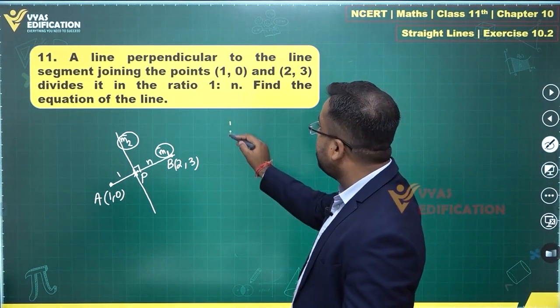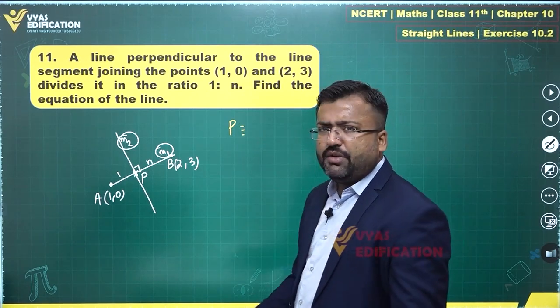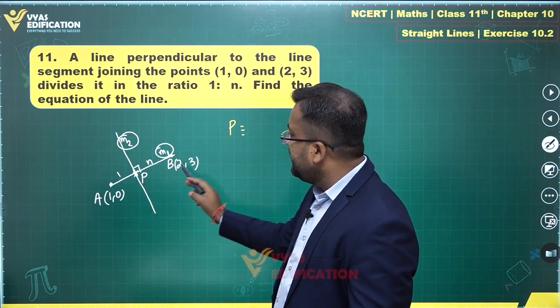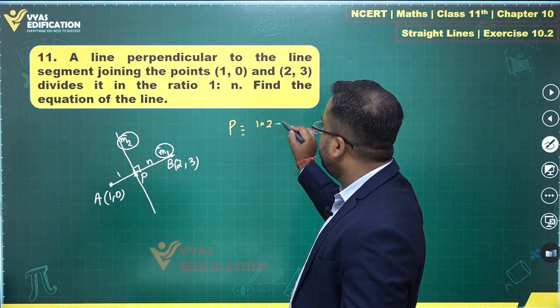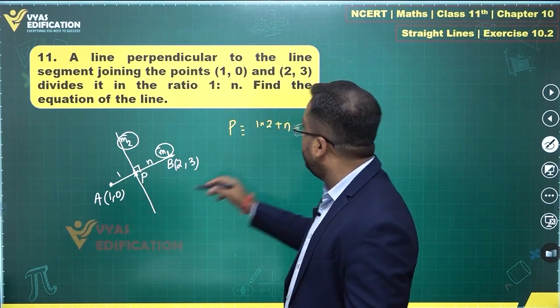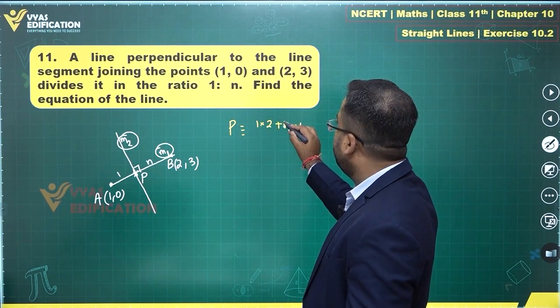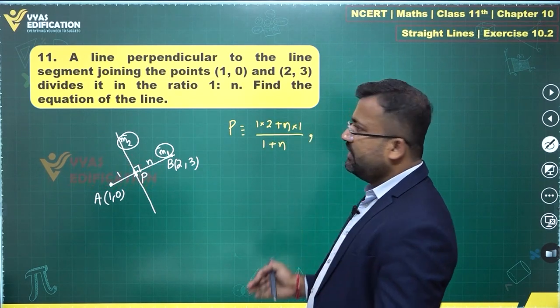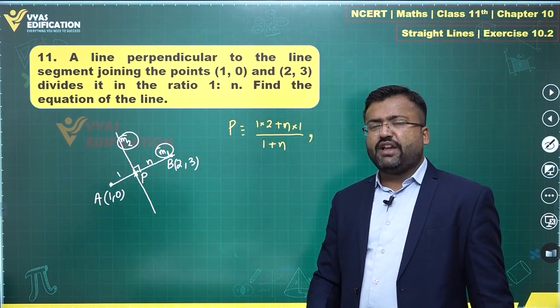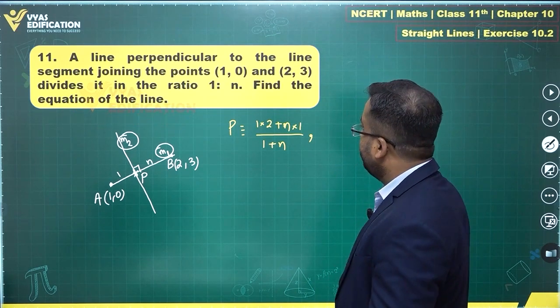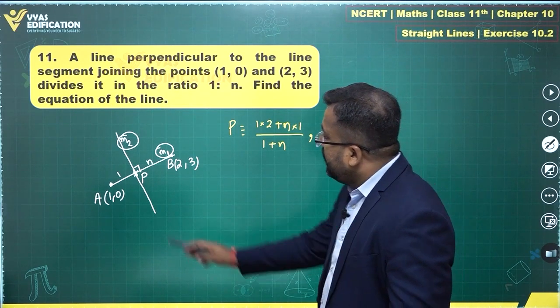The coordinates of point P are very simple: 1 times 2 plus n times this 1 upon 1 plus n. This is m1x2 plus m2x1 upon m1 plus n2. Next, 1 times 3 plus n times 0.